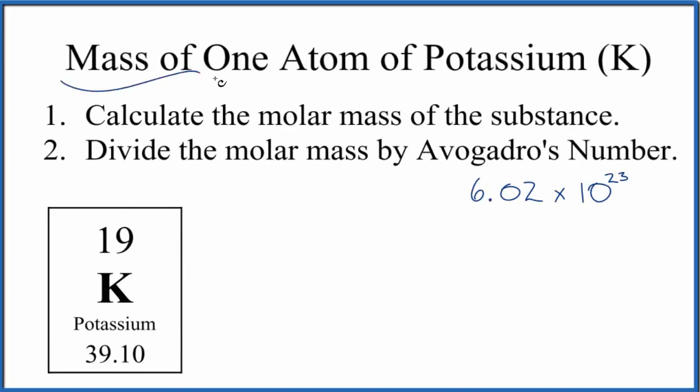Let's take a look at the mass of one atom of potassium, that's K, and we're going to look at the mass of an average potassium atom. So really all we need to do is calculate the molar mass, actually here it's the atomic mass, and we're just going to divide that by Avogadro's number.